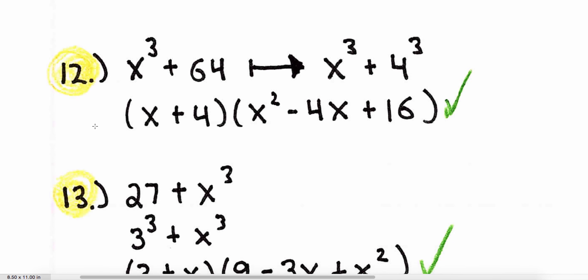Number twelve: x to the third plus 64. This is the sum of two cubes, since 64 is 4 to the third. So a is x and b is 4. Applying the formula, this becomes x plus 4, times x squared minus 4 times x plus 16. That's number twelve.